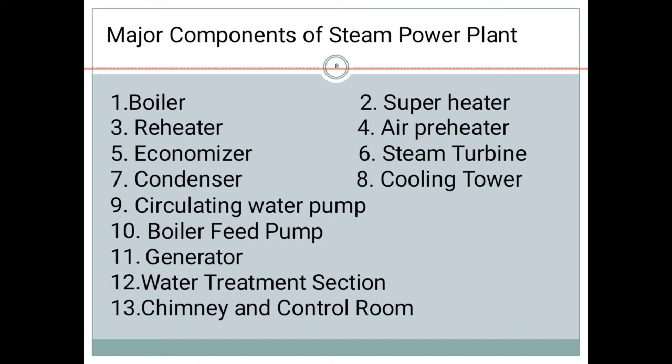Economizer is used to preheat the water. And air preheater is used to preheat the air. And super heater is used to increase the temperature and eliminate the moisture in the vapor.